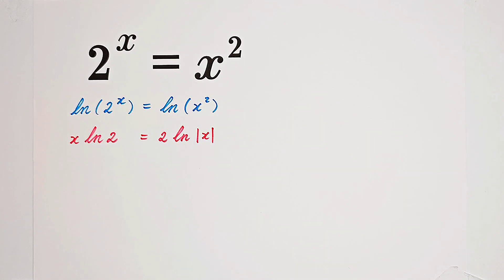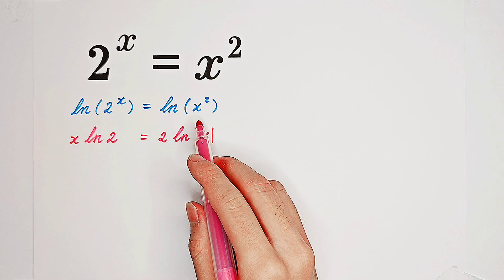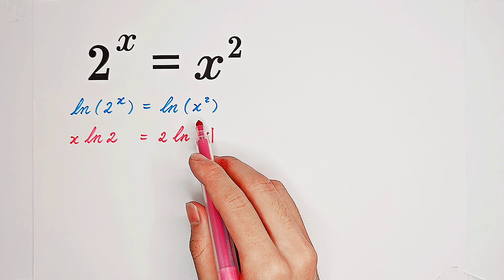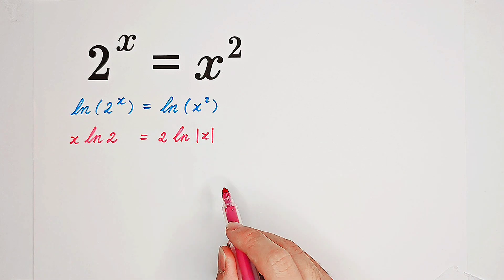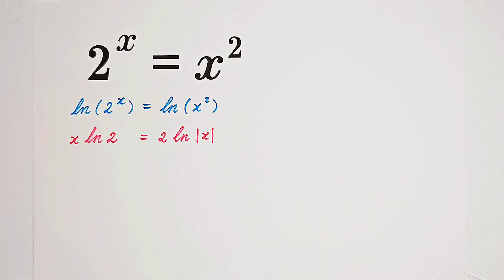Why? Because if x is negative, the natural log of x doesn't make any sense. So therefore, we need an absolute value. Just remember: the natural log of x squared is not 2 times the natural log of x, but 2 times the natural log of the absolute value of x.